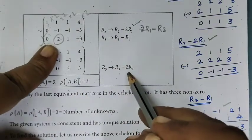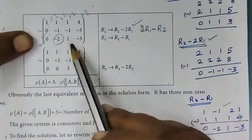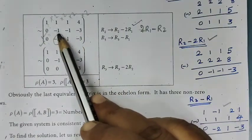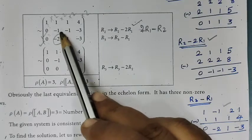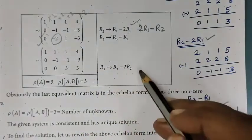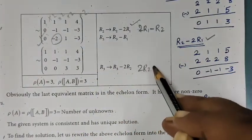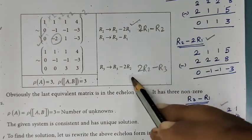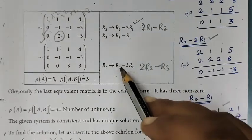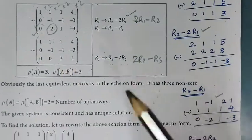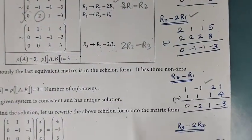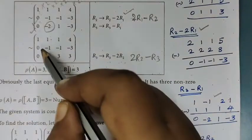R3 minus 2R2. That means R2 multiplied by 2, then 1 plus 2 and 1 minus 2. 2R2 minus R3 equals R3. If it is equal to R3, it will be cancelled. So this is 0. This is the echelon form.